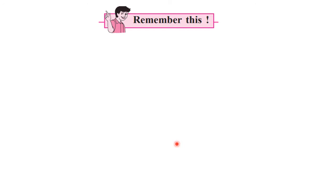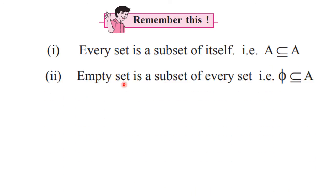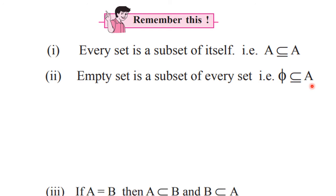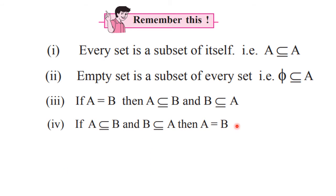Now we will see some important properties about subset. First, every set is a subset of itself — that is, A is a subset of A. Second, the empty set is a subset of every set — phi is a subset of A. Third, if A equals B, then A is a subset of B and B is a subset of A. Conversely, if A is a subset of B and B is a subset of A, then A equals B.